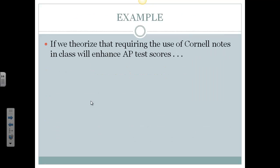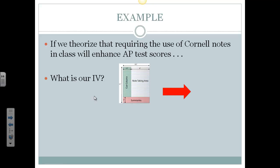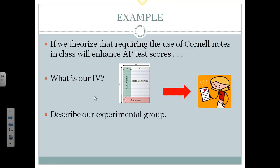So in our example, if we theorize that requiring the use of Cornell notes will enhance AP test scores, then we would require the experimental group to use Cornell notes. And this is our IV, Cornell notes, the use of Cornell notes as our independent variable. We manipulate this and we think it has an effect. So Cornell notes in our theory is going to help us score better on our AP test, which I think it probably will if you do it.